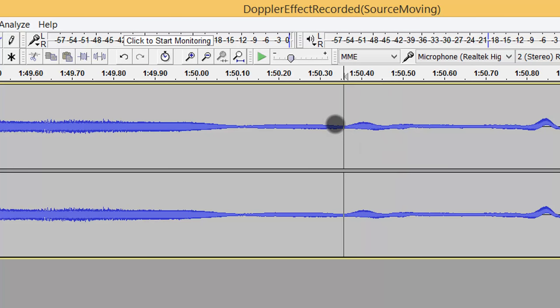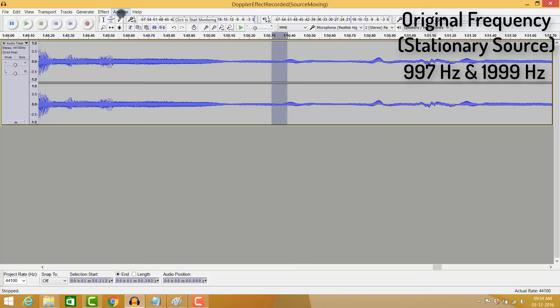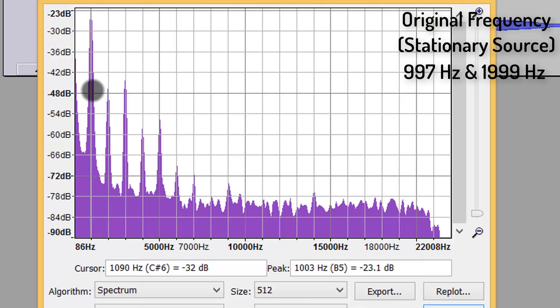So, before this, the source was approaching, and after this, the source went receding away. Okay, so, if we analyze over here, I hope to expect a higher than 997 frequency. So, let's plot spectrum, and let's put our spike.